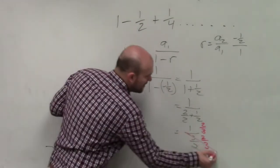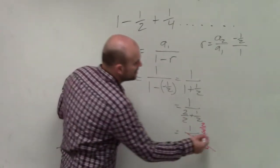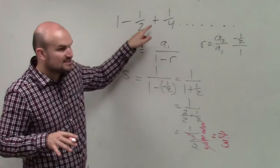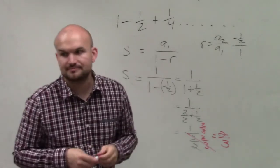Well, any number multiplied by its reciprocal multiplies to 1. I'm left with 1 times 2 thirds is 2 thirds. So the sum of this geometric series is going to be 2 thirds. That's so sweet.